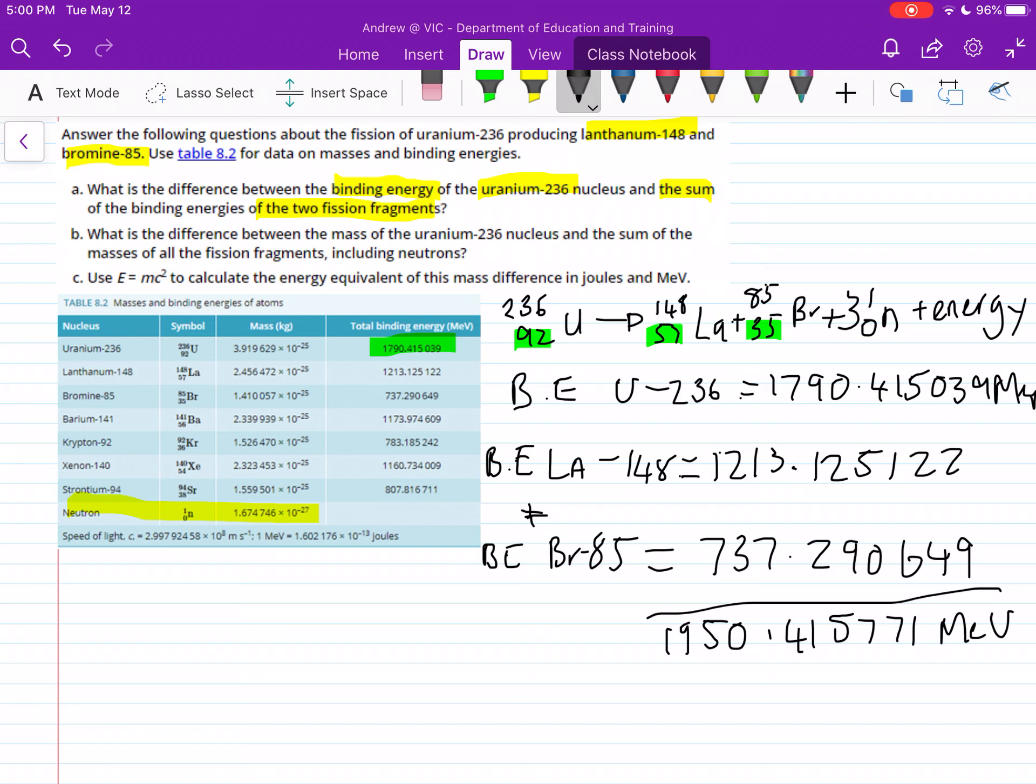Now in this question here, we have worked out the sum of the binding energies here, and we've worked out our binding energy of uranium. And now in the question, it just asks us the difference between them. So the difference is just taking them away. We get the higher number and take it from the smaller number. So we just do our energy difference.